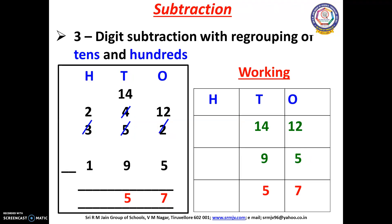Let us move on to the 100's place. Here we have 2 and 1. We can subtract 2 minus 1. Open your fingers: 1 after 2. How many fingers have you opened? Yes, 1 finger. So we have to write 1 here. The difference between 352 and 195 is 157.